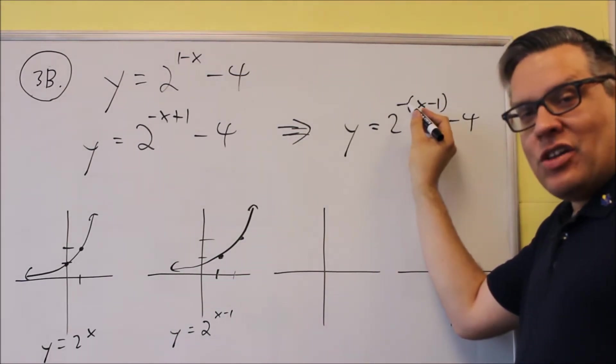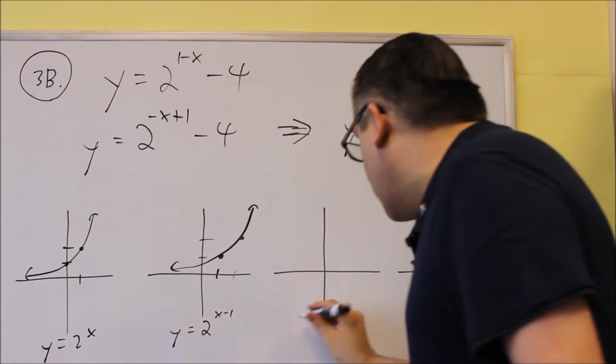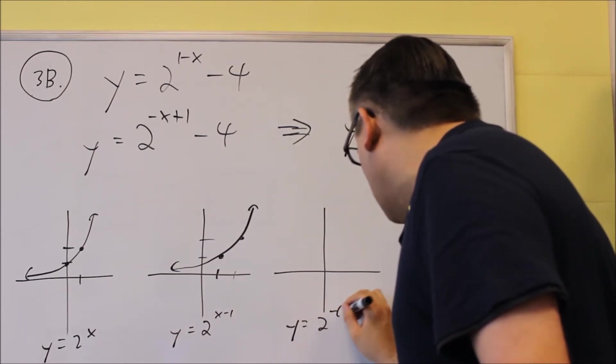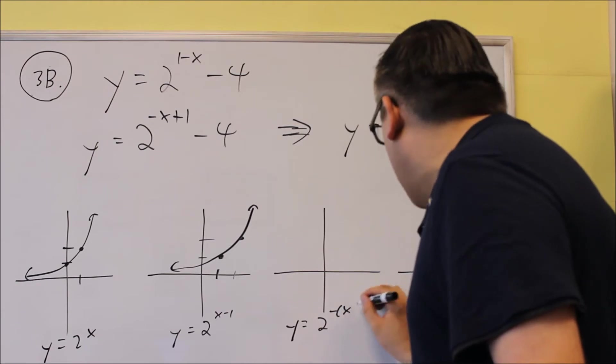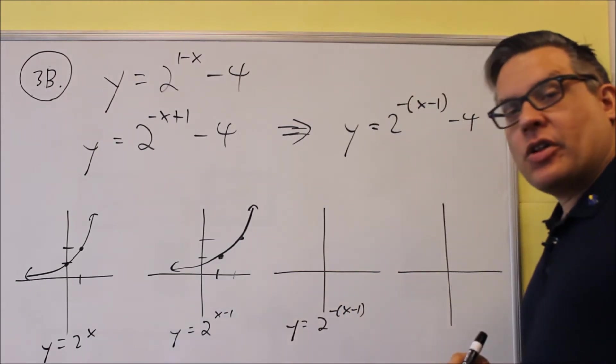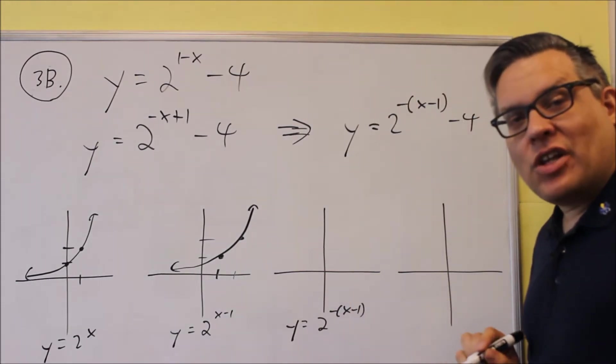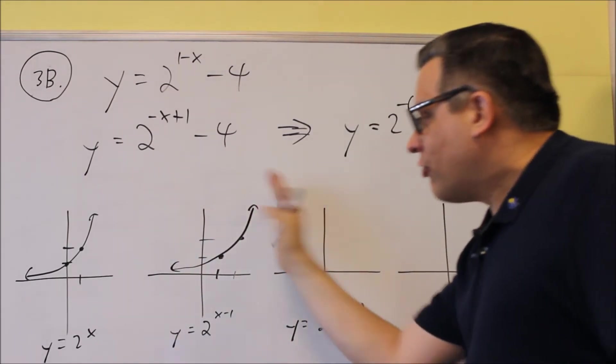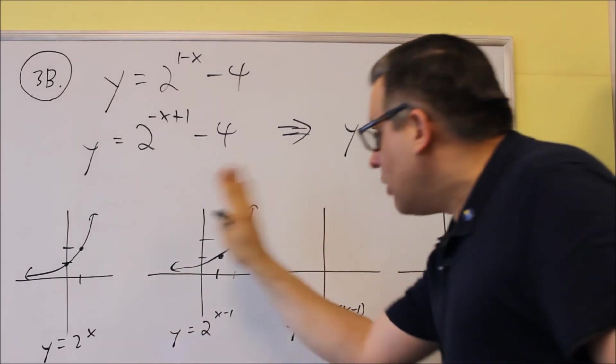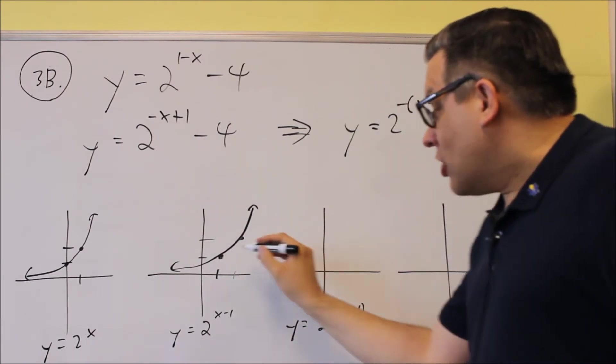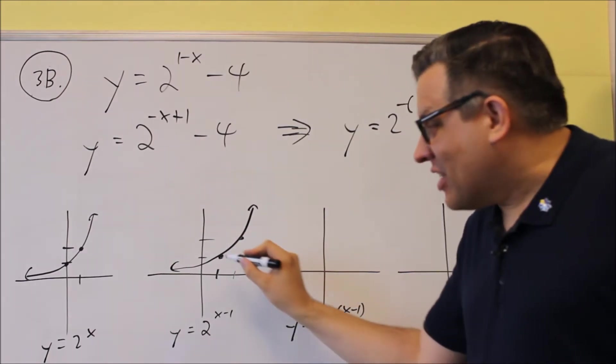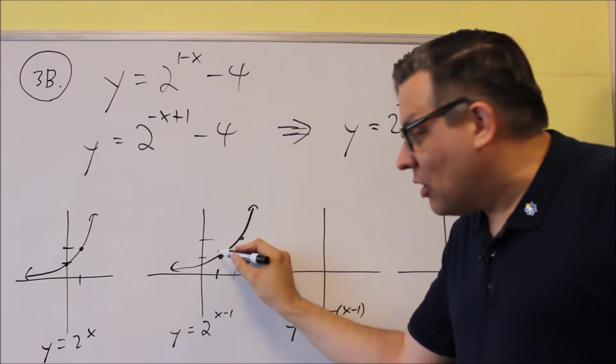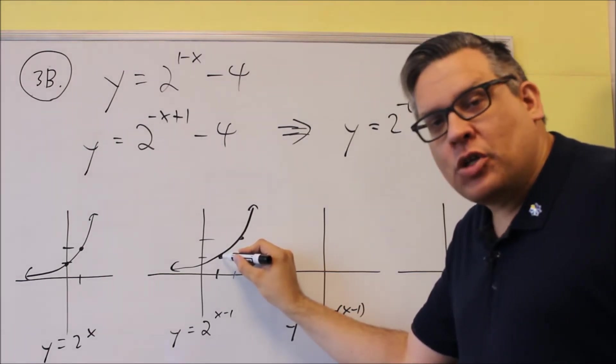Let's now apply the negative in the exponent position. So we're now going to do y equals 2 to the negative x minus 1. Now what that does, because you have a negative in the exponent position, that's going to reflect the graph this way. It's going to flip it over the vertical axis. Now the pivot point of this is actually this point right here.